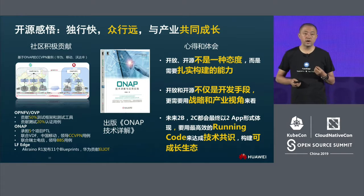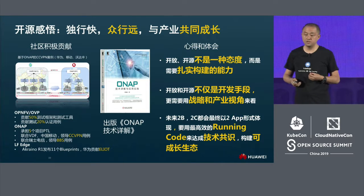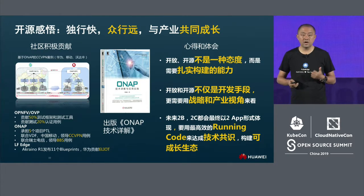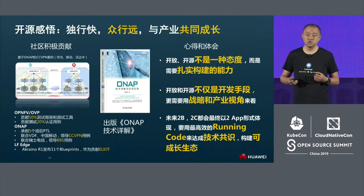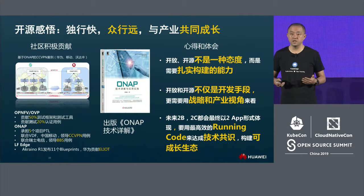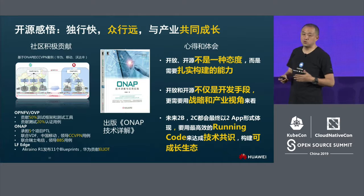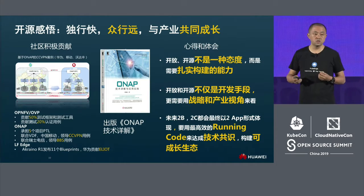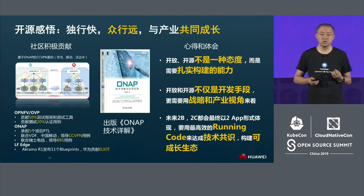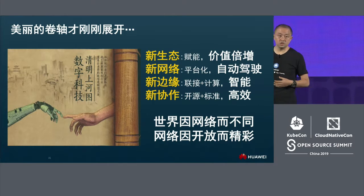With so many years of participation and development in the open source community, I have my own observations to share. Openness and open source is not just an attitude — it is based on capability. It is related to strategy and industrial development. In the future, for 2B and 2C, the most efficient way to realize consensus in technology is very important for sustainable development.